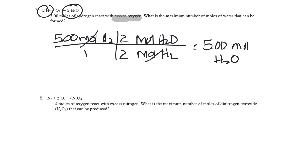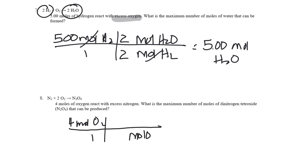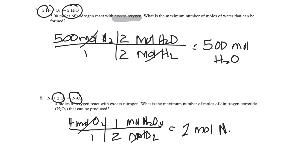Last example: four moles of oxygen react with excess — we already talked about excess. What is the maximum amount in moles of N2O4 that can be produced? Set up number and unit: four moles of oxygen over one. Moles of oxygen comes down; I want to get to moles of N2O4. In the equation, there's a one next to N2O4 and a two next to oxygen. Cancel units — two moles of N2O4 can be made. See you next time, good night.